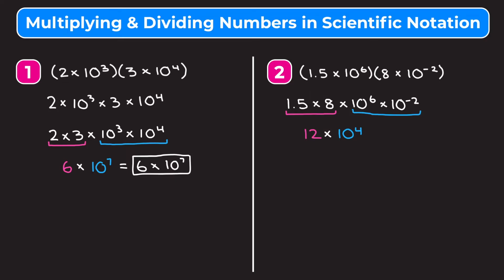This number is not written in scientific notation because 12 must be greater than or equal to 1 and less than 10. We need to change 12 into 1.2 by dividing by 10, or moving the decimal one place to the left. To keep the number the same, we multiply 10 to the fourth by 10 to the first, adding exponents to get 10 to the fifth. So 12 times 10 to the fourth written in scientific notation is 1.2 times 10 to the fifth.